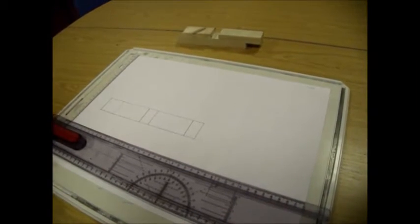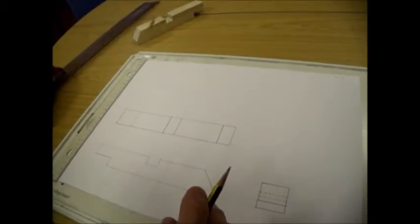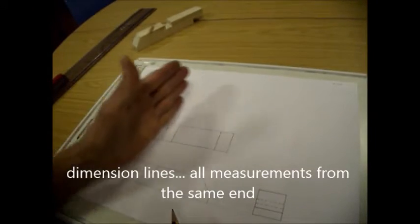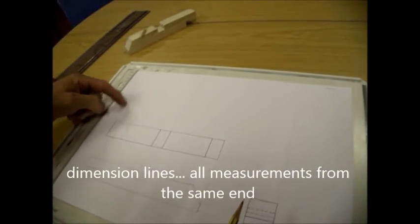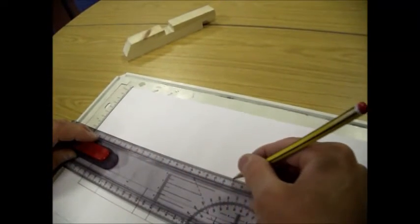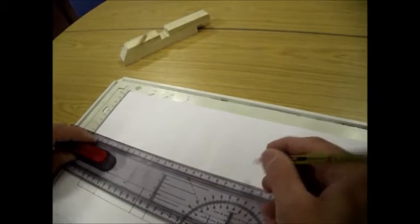Okay, so what we need to do now is put our dimension lines on. Now, when you dimension or put your sizes on, you always measure from the same edge. So start off about 30 or 40mm above the top of the top drawing, the top of the plan view, and draw a faint dimension line like that.